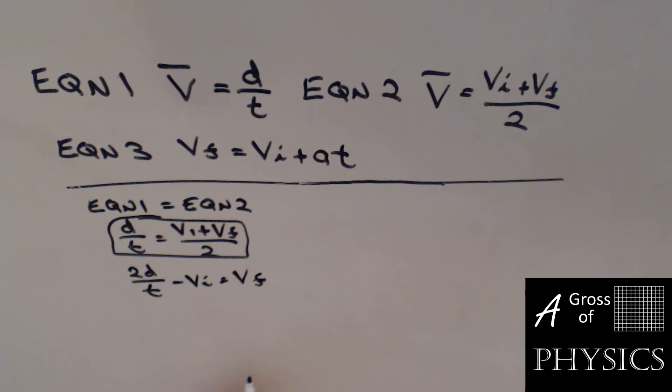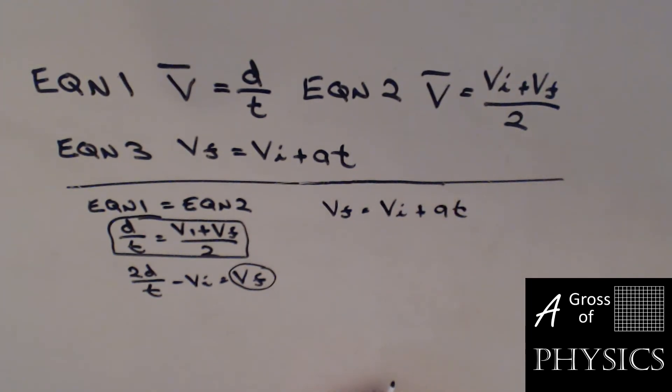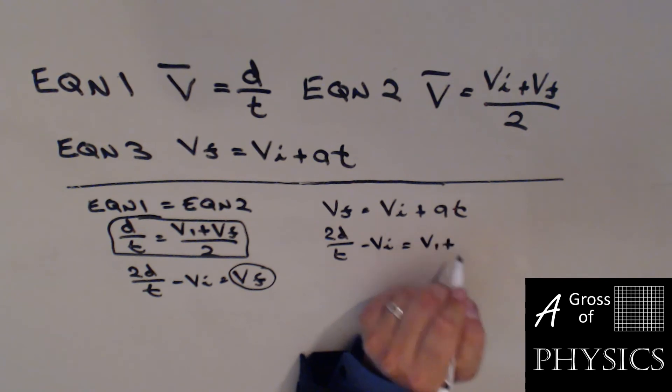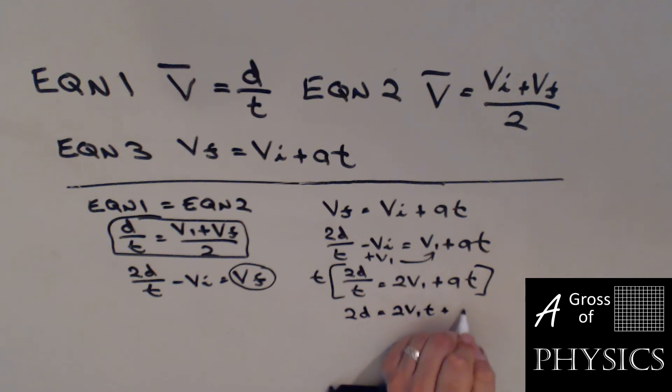We're going to take that and substitute it into equation 3, which is VF equals VI plus AT. So 2D over T minus VI equals VI plus AT. I'll add the VI to both sides. That would make it 2D over T equals 2VI plus AT. I'll multiply the whole thing by T to eliminate this T here, which brings the T to the other side. 2D equals 2VIT plus AT squared.